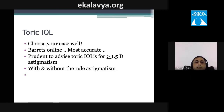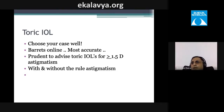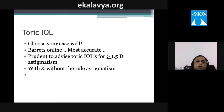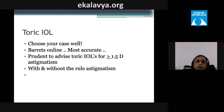The Barrett online toric calculator is the most accurate formula. Barrett advises treating every patient as having astigmatism even if refraction is zero, and using the data to decide on toric vs. non-toric IOL. Generally, greater than 1.5 diopters warrants a toric IOL, and the formula also guides whether to leave the patient slightly with or against-the-rule.